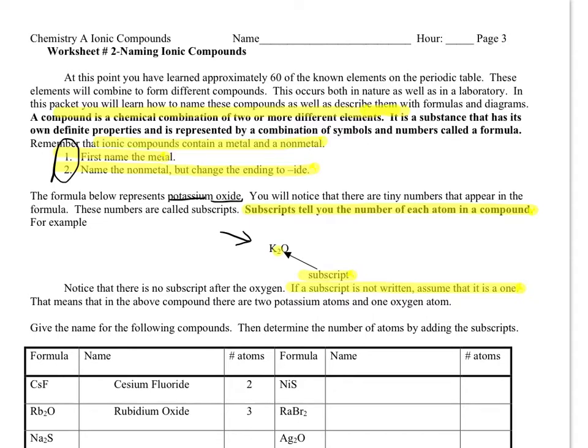little two, which is a subscript. It's written down low. Subscripts tell you how many of each atom are in the compound. It turns out, and we'll learn actually in the next worksheet, why they combine in these amounts.